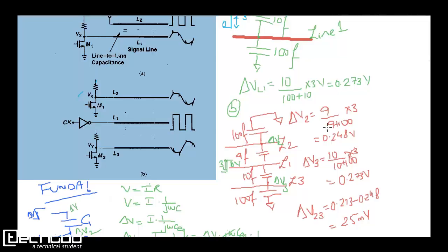So delta V2 is 9 by 9 plus 100 into 3. So it is plus 3 volts here change, and here it is minus 3 because suppose this is plus 3 for this end, so this will be minus 3 for this end. So this is 0.248 you will get, and here it is 0.273. Now when you add these two, you will get 25 millivolts. That is the amount of glitch you will see. That is delta V23, the difference. So 0.273 minus 0.248, that is 25 millivolts.